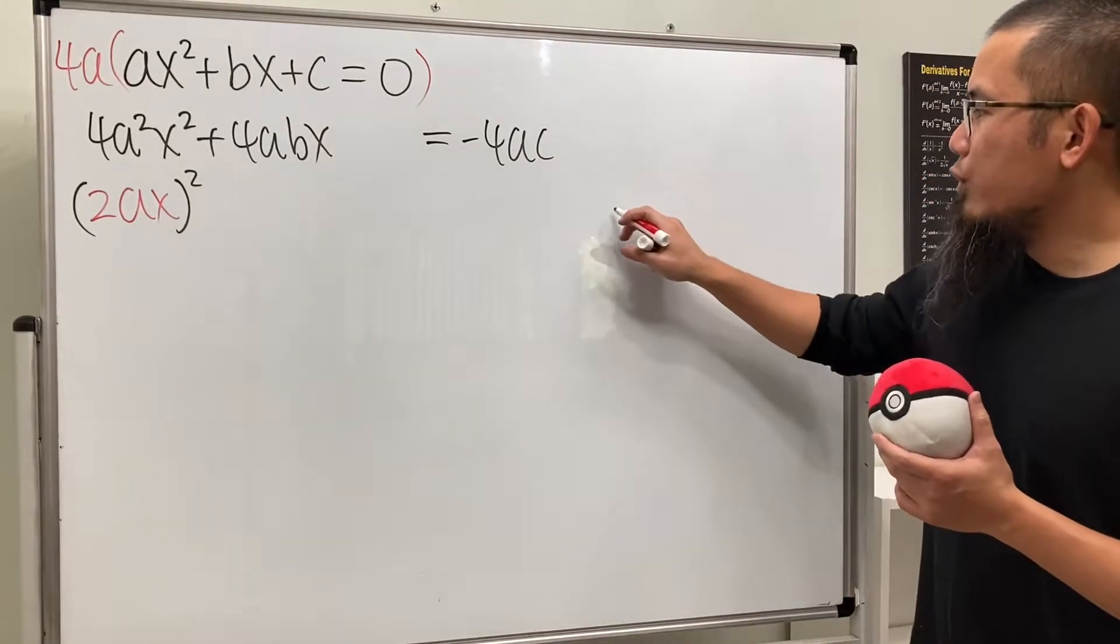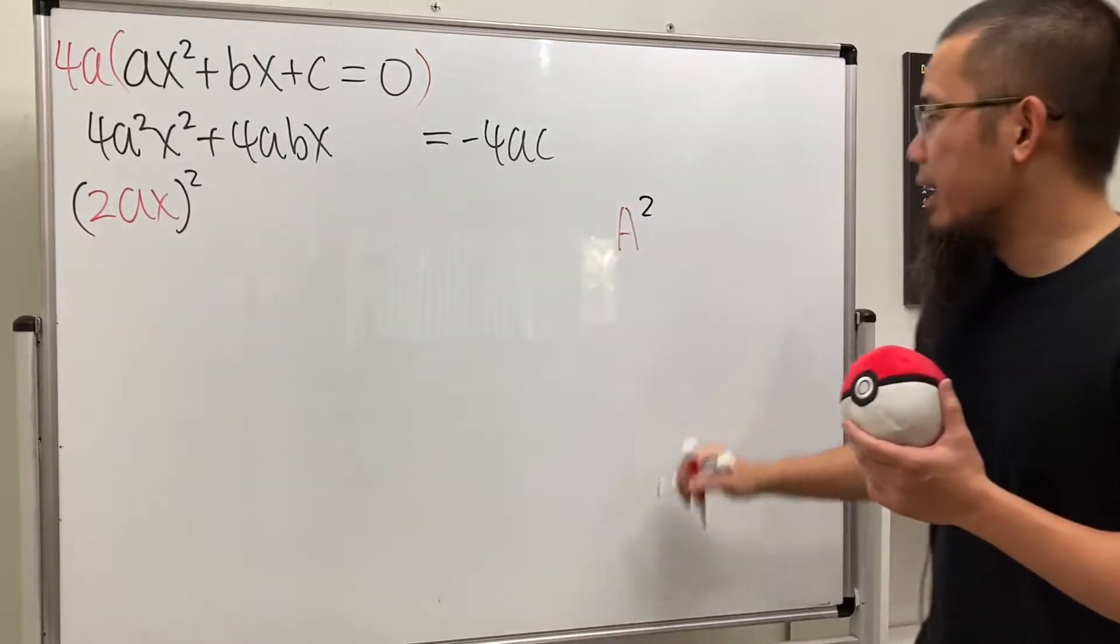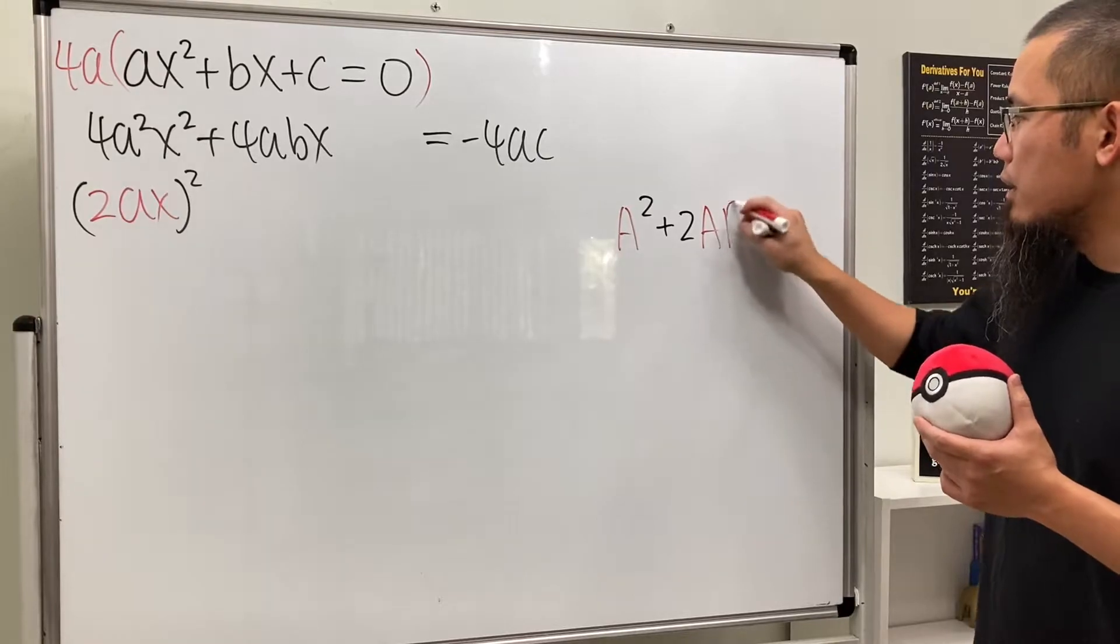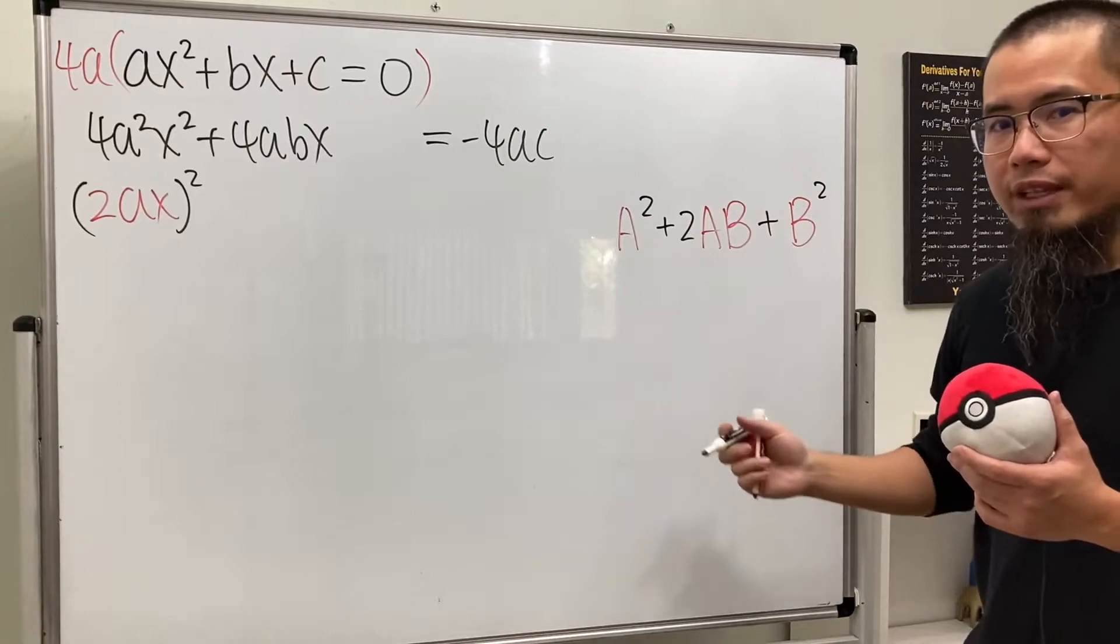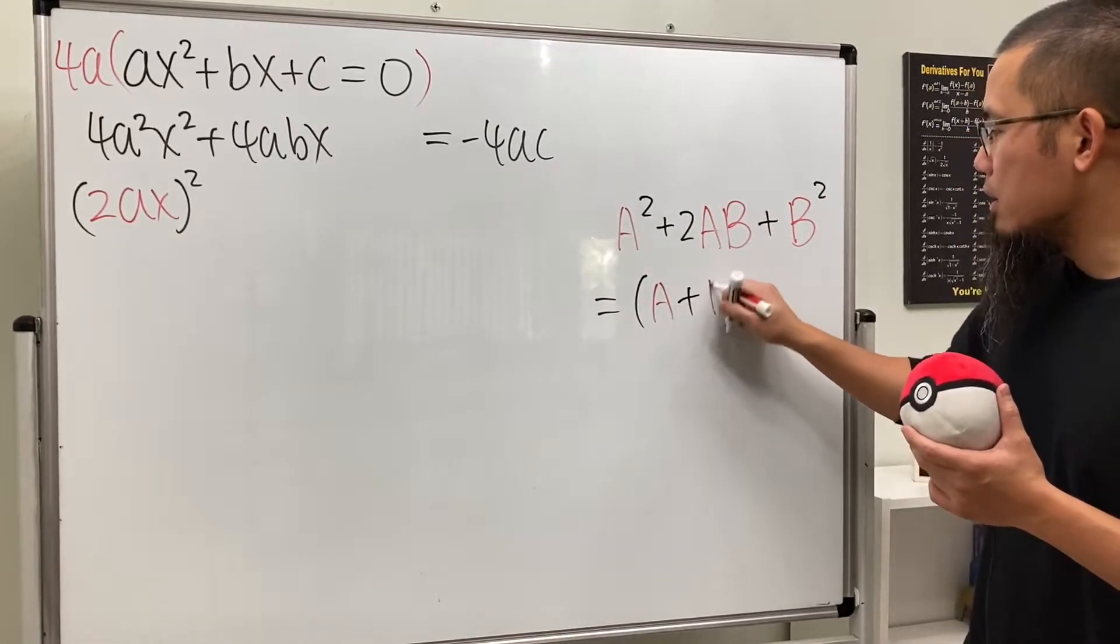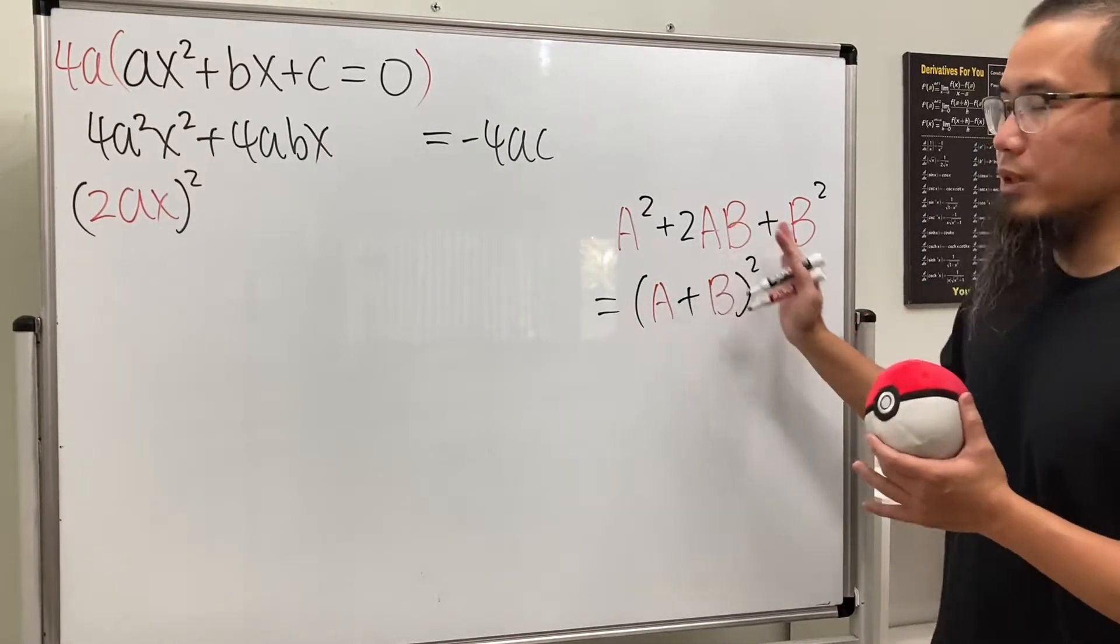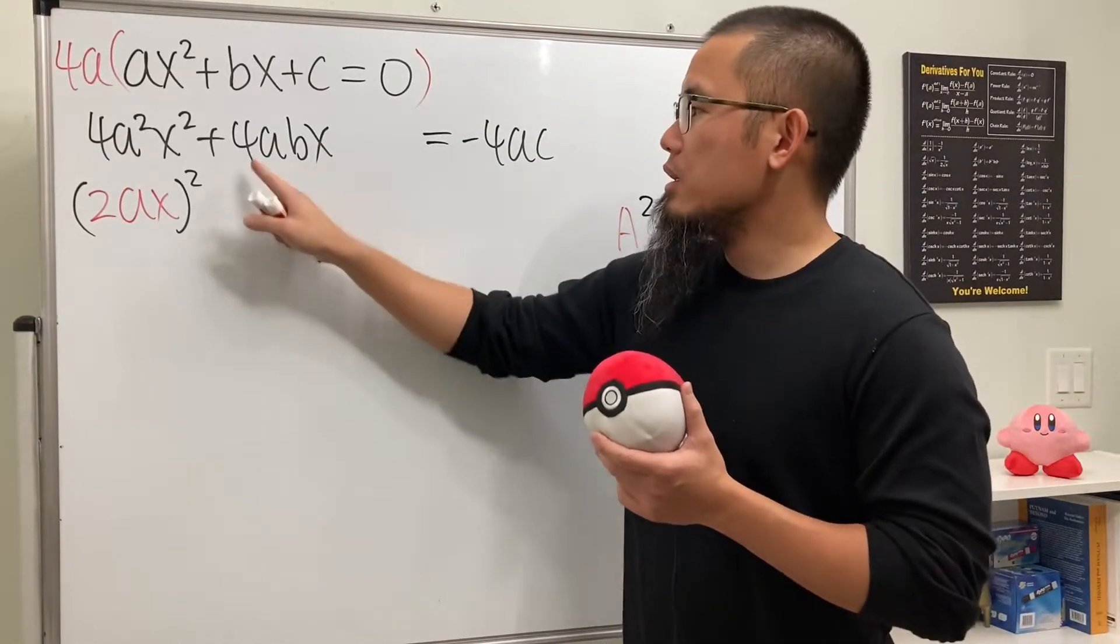Remember that if we have a² plus 2ab plus b², this right here is very nice because it gives us (a + b)². So we're just trying to match with this form. And you see, that's why we care about having an even right here. So this is 4.